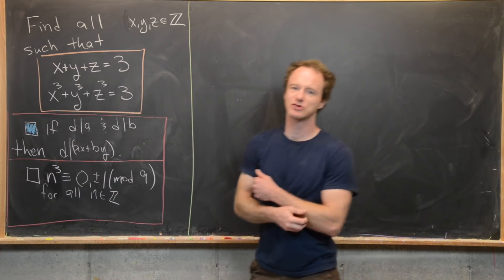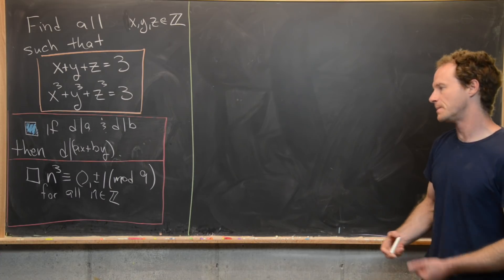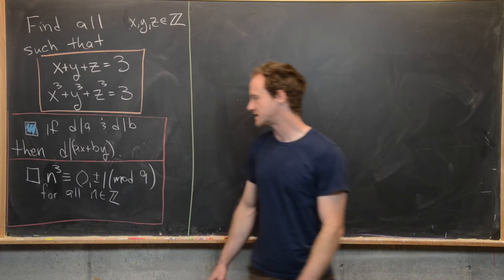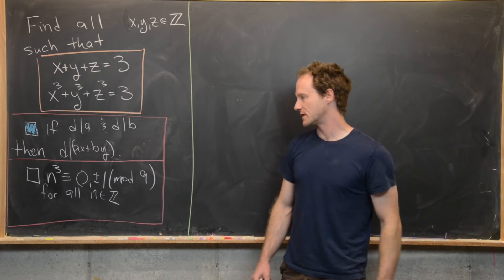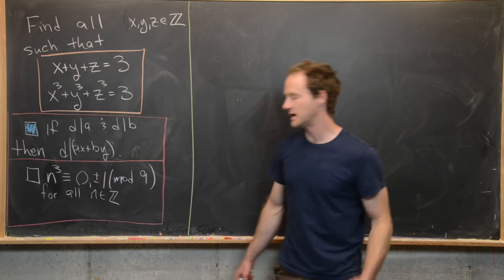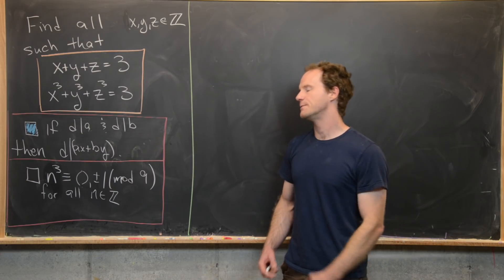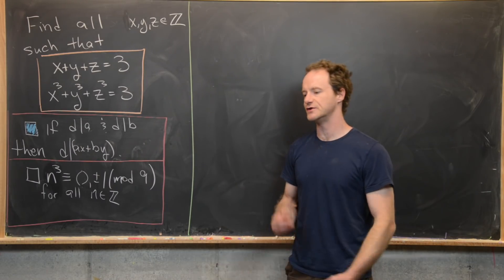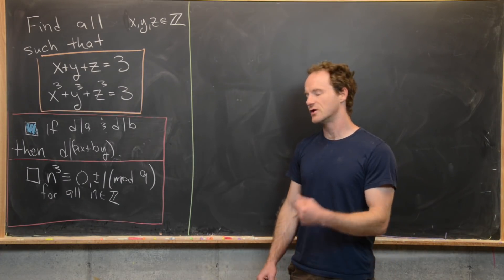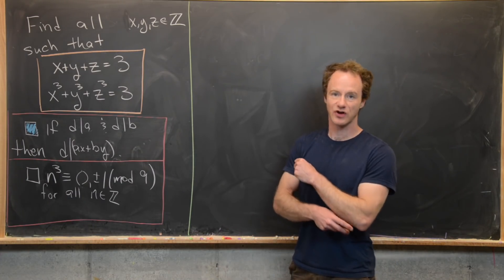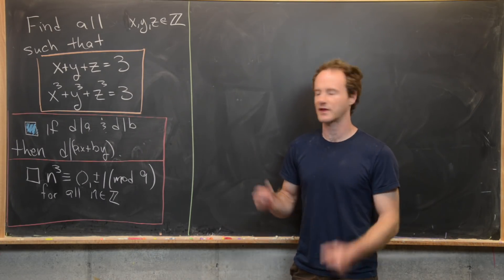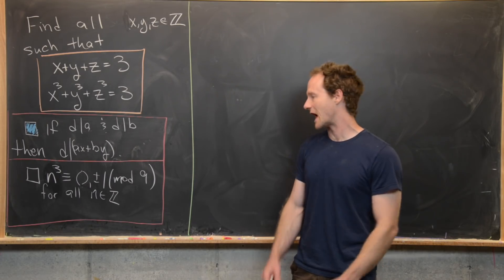The second tool: if you take any integer n and cube it, you only have three possibilities — it can be congruent to zero, one, or negative one mod nine. This is the notion of cubic residues; there are only so many cubic residues modulo nine. That notion isn't as well known as quadratic residues, but we're going to check it by calculation.